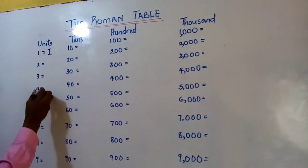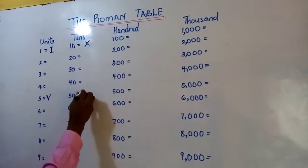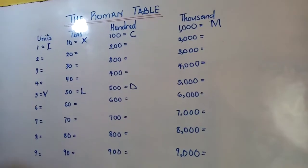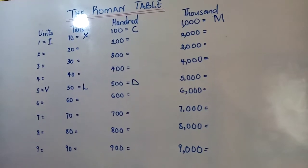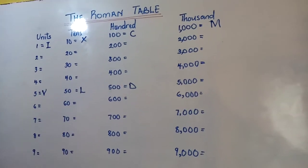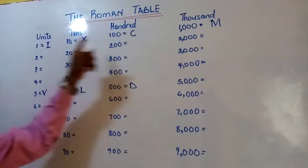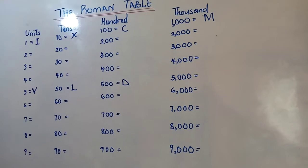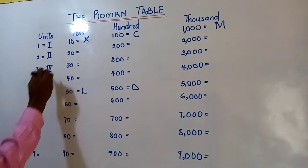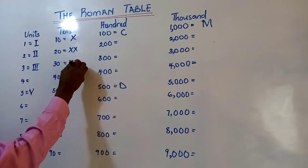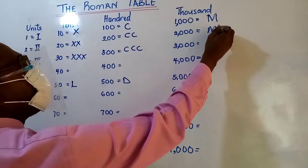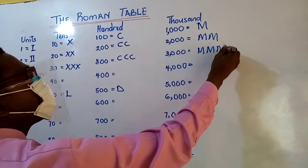IVXL, IVXL, IVXL, CDM, CDM. Add the basic Roman numerals: I, X, C, M. Special Roman numerals: I, X, C, M. Repeat Roman numerals: I, I, I, X, X, X, M, M, M. Okay?